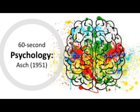Asch found that 75% of participants conformed to the wrong answer at least once, and overall the participant conformed on 37% of all tasks.